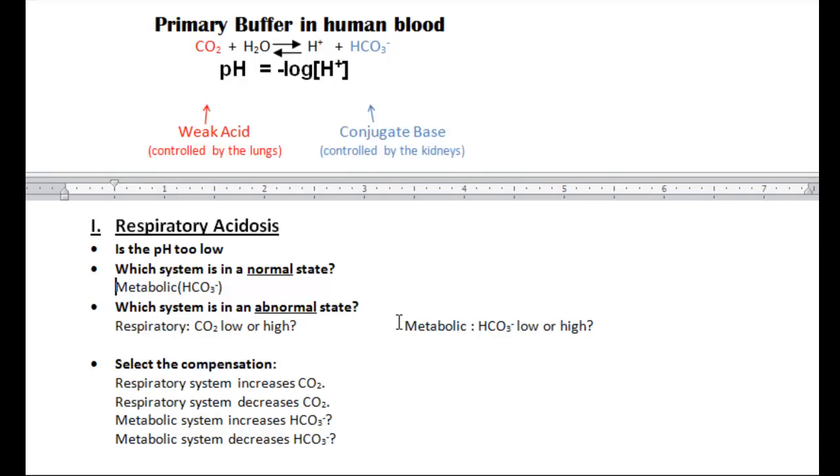So the next question is, what is abnormal? And that is the respiratory system. For the respiratory system to create an acidic environment, remember the lungs control the acid. So the CO2 must be too high.